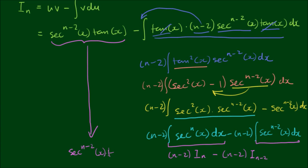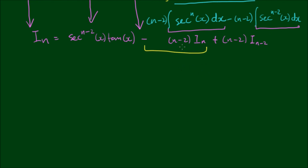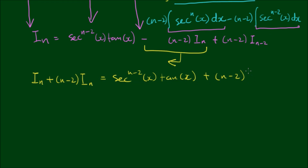Copying down the terms from the beginning of the equation: sec to the n minus 2 power of x times tan x, minus the whole bracket. Expanding the minus sign into the brackets gives minus n minus 2 times iₙ plus n minus 2 times i sub n minus 2. The left-hand side also has iₙ, so iₙ plus n minus 2 times iₙ equals sec to the n minus 2 power of x times tan x plus n minus 2 times i sub n minus 2. The left-hand side simplifies to n minus 1 times iₙ.